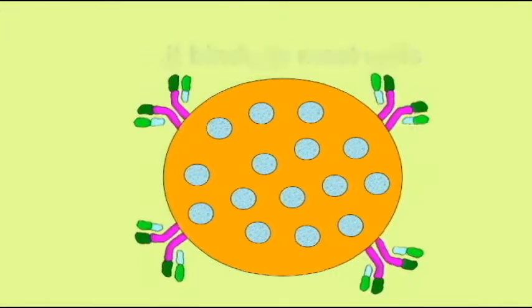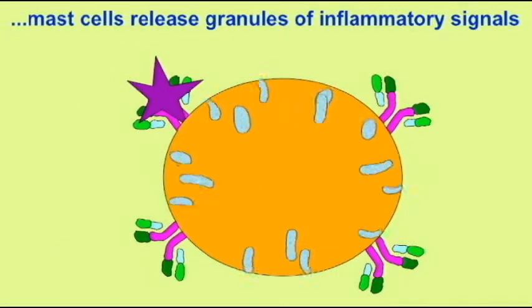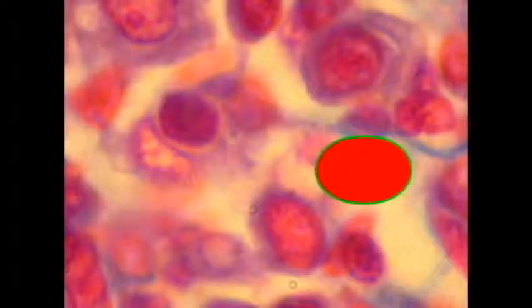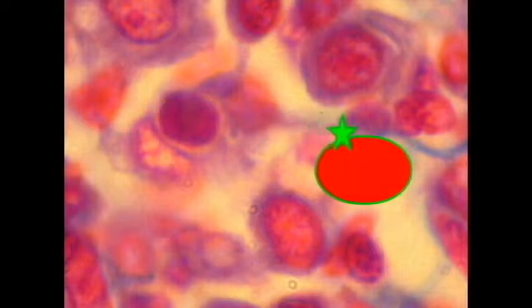An intelligent design advocate would argue, what good would an MHC protein be without a lymphocyte which could react with it? What good would antibodies be without the complement system that they activate? There are so many parts in these reactions, what good would one part be without others?